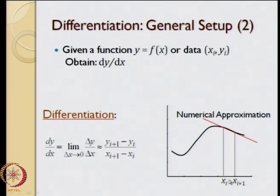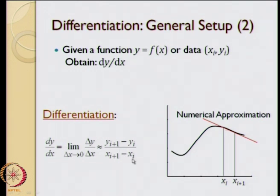As we bring x_i+1 closer and closer to x_i, we will start approaching the analytical or the actual derivative dy by dx. However, we cannot take x_i+1 very close to x_i because then round-off errors will start dominating. This particular method is just a first-order method to find a numerical differentiation.